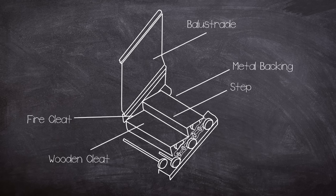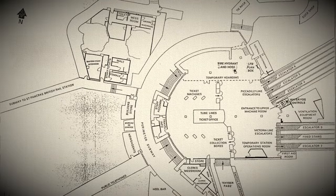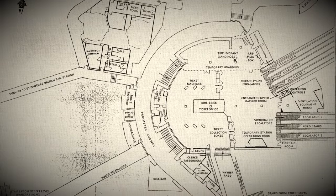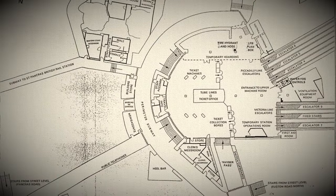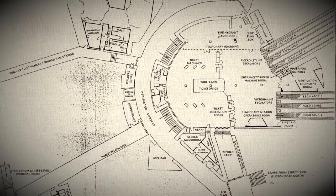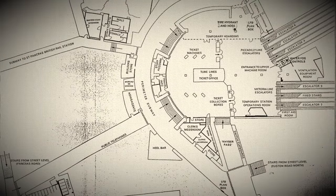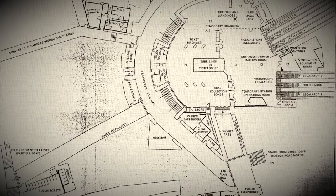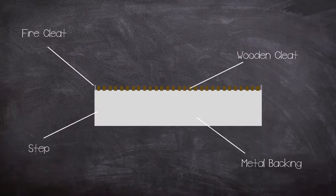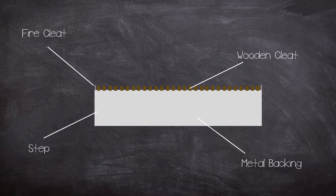These were meant to stop cigarette butts and matches from entering the escalator mechanism but they needed regular adjustment as unsurprisingly with around 250,000 daily users of King's Cross station damage was a regular occurrence. Through the machine's working life some of the cleats became missing leading to around a quarter not installed on the escalators.